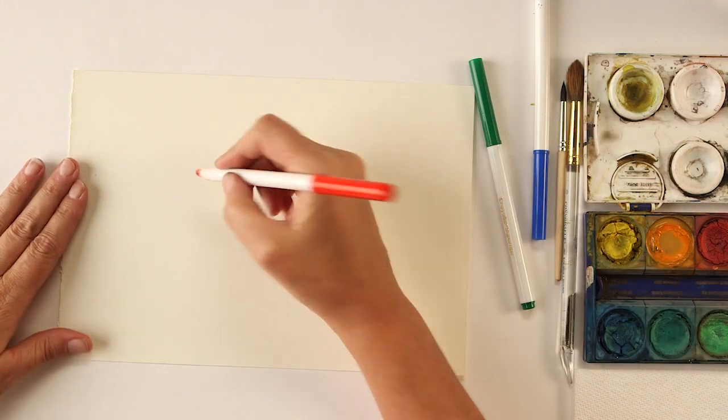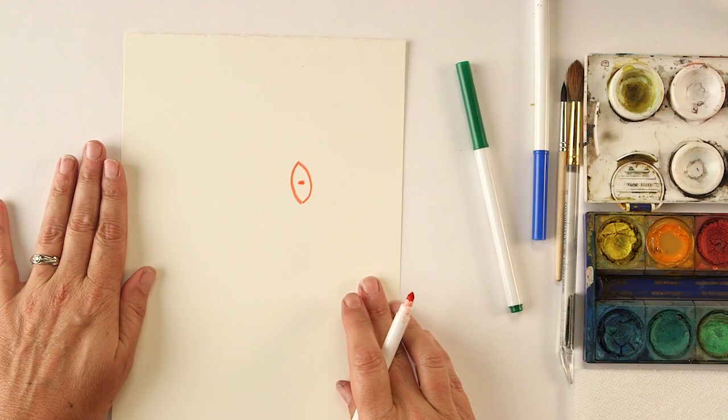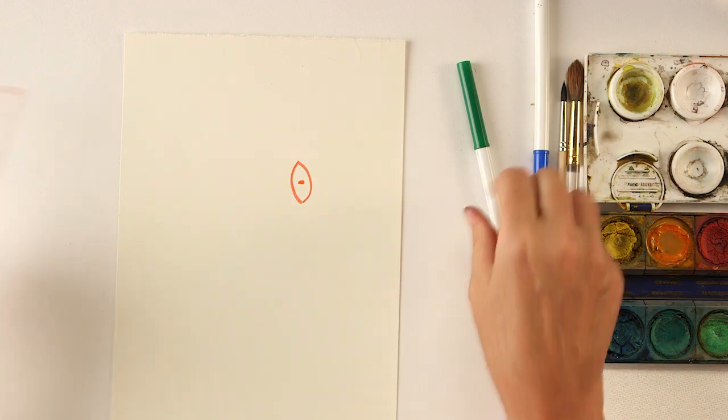First thing you do is draw an eye anywhere on the paper. So I'm going to draw an eye, and then you're going to turn your paper 90 degrees clockwise, get another color, and draw a second eye three times bigger than the first eye that you drew.